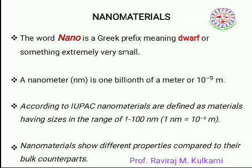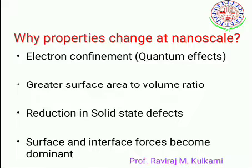According to IUPAC, nanomaterials are defined as materials having sizes in the range of 1 to 100 nanometers. This range is significant because quantum chemistry plays a major role here — classical mechanics doesn't work, so the properties change at this scale. Nanomaterials show different properties compared to their bulk counterparts.